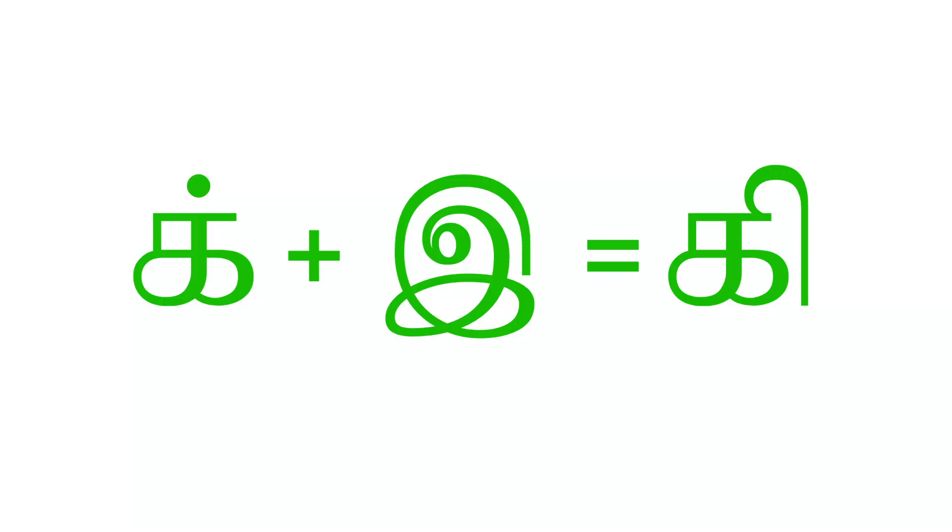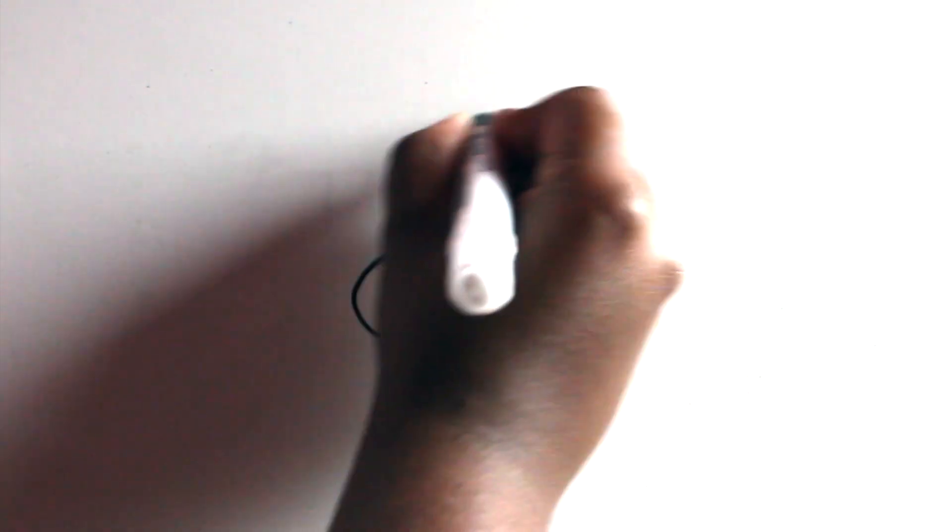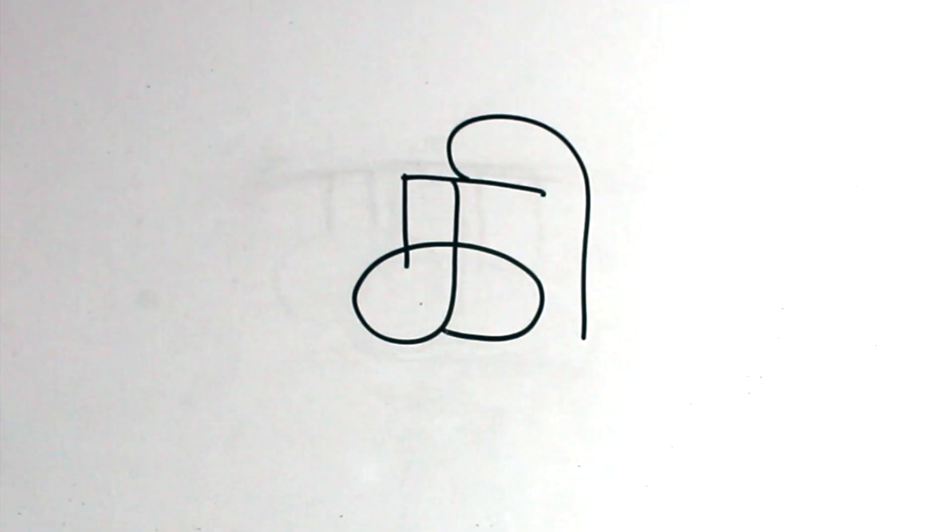Next, combining ik and i makes ki. You start by writing ka and add a visiri again.